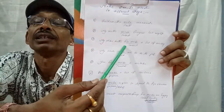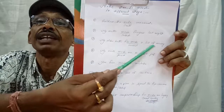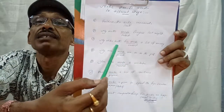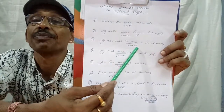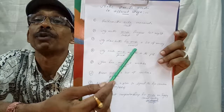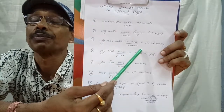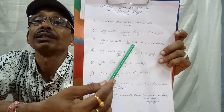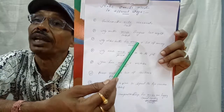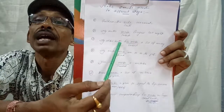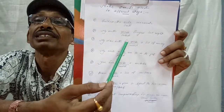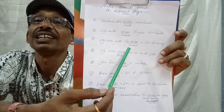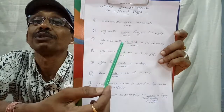Third example: 'My elder brother has made a lot of money.' This is present perfect tense — 'has made' means 'has earned.' So instead of using 'earned,' we can use 'made' here — 'has made a lot of money.'